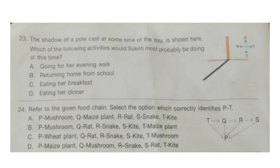Question 23. The shadow of a pole cast at some time of the day is shown here. Which of the following activities would Sukriti most probably be doing at this time? Options are: A, going for her evening walk; B, returning home from school; C, eating her breakfast; D, eating her dinner. Now look at the picture. The shadow will be cast in the opposite direction of the sun, so the sun will be in the north-east direction, and that is morning time. So Sukriti will most probably be having her breakfast. Correct answer is option C.